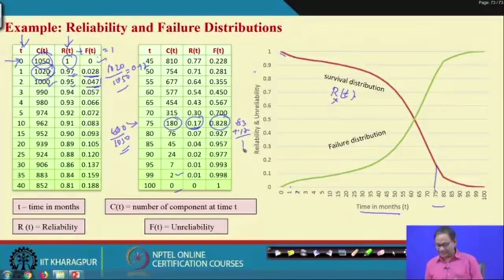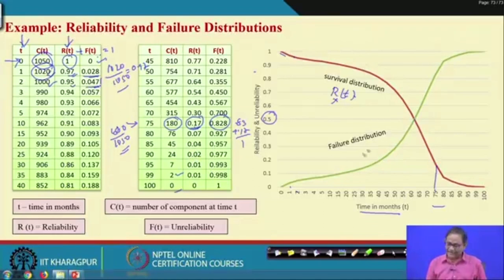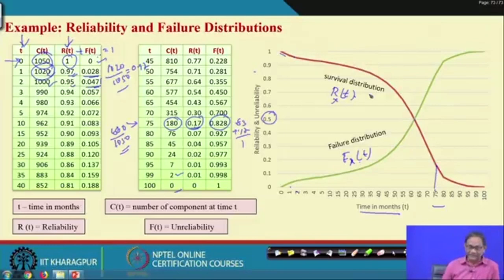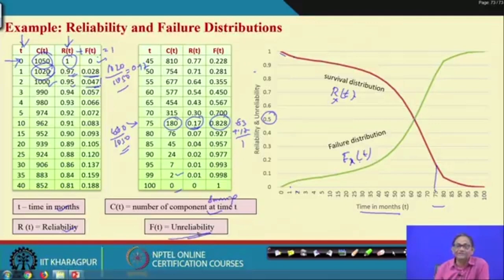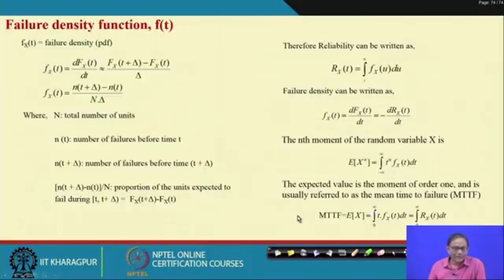F(t) = 1 − R(t). So at t=1, F(t) = 1 − 0.97 = 0.03; at t=75, F(t) = 1 − 0.17 = 0.83; and 0.17 + 0.83 = 1. The two curves intersect at the point where the probability of surviving equals the probability of failing, both equal to 0.5.